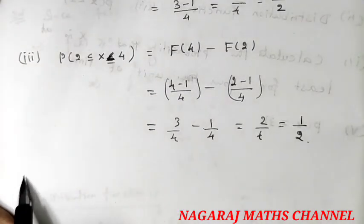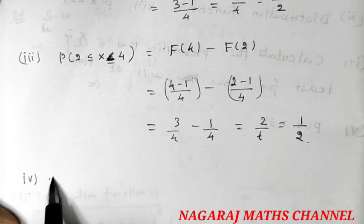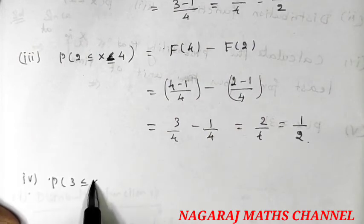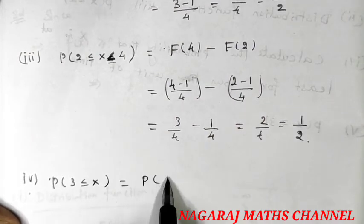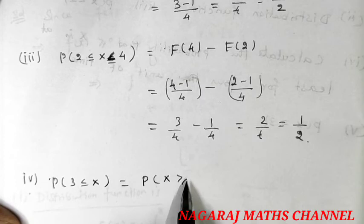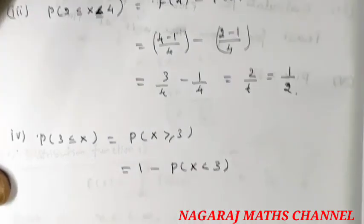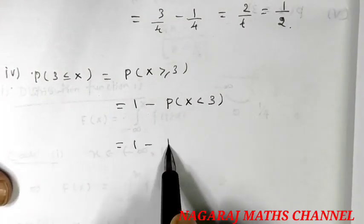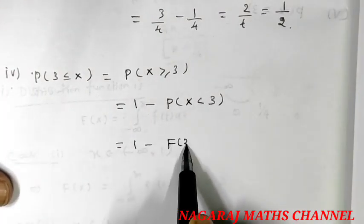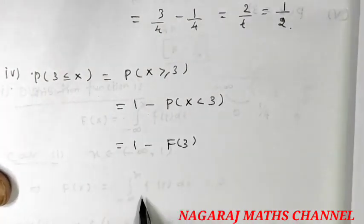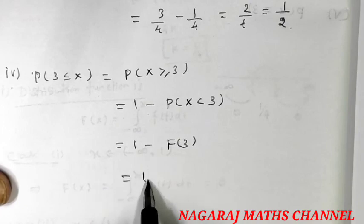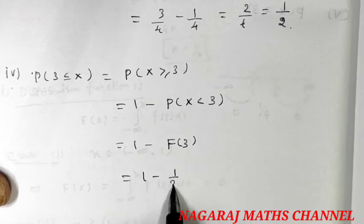For the fourth part, P(X ≥ 3) equals 1 minus P(X < 3), which is 1 minus F(3). F(3) = (3 − 1)/4 = 2/4 = 1/2. So P(X ≥ 3) = 1 minus 1/2 = 1/2.